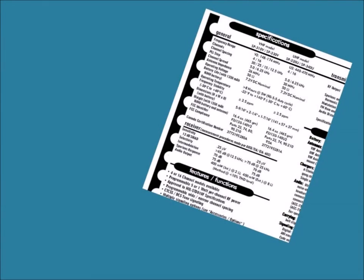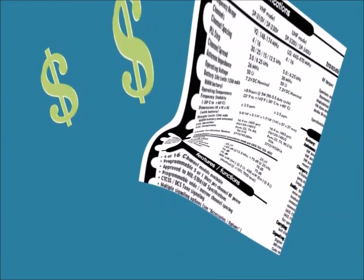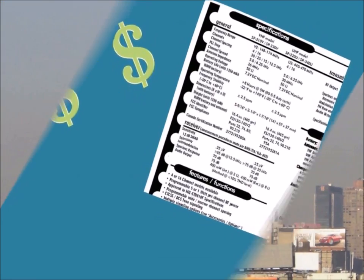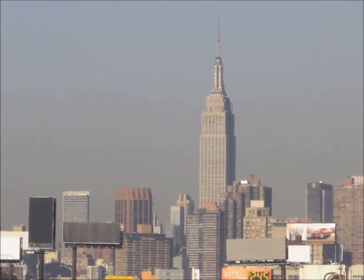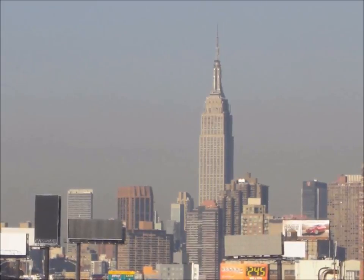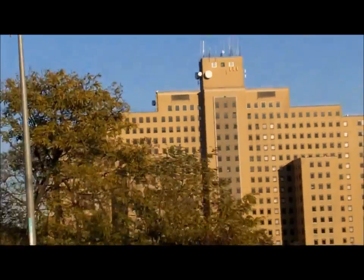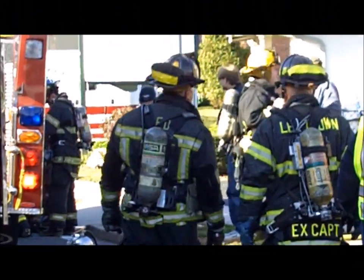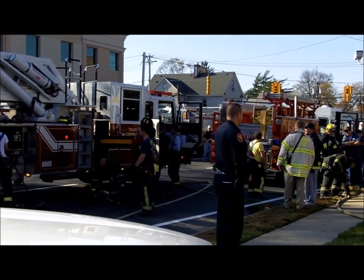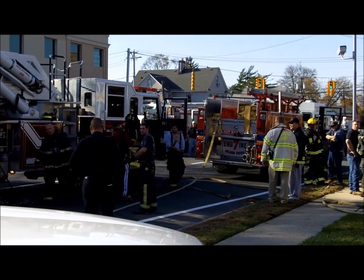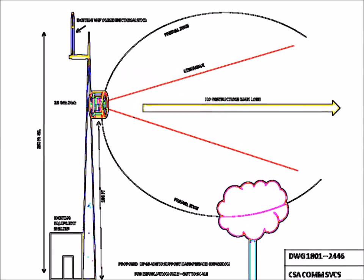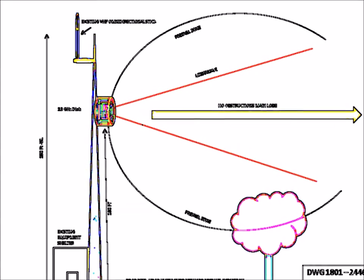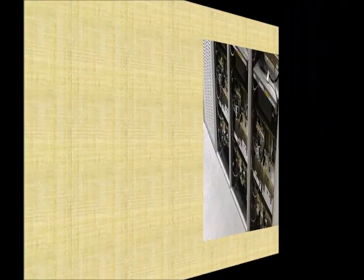Subscriber radios are generally selected by an agency based on operational needs and cost. An agency operating in a metropolitan environment may select a radio with better filtering for improved performance where there are strong interfering signals, which may increase the cost. Other groups may need less power for tactical communications, providing a cost saving. An agency may hire a radio system consultant or use their own engineering team to assist in selection.